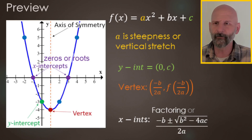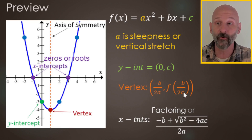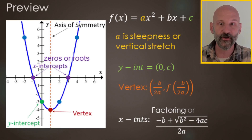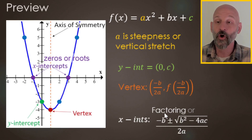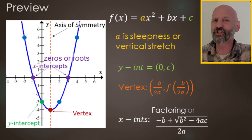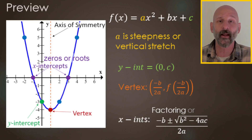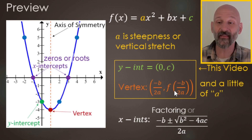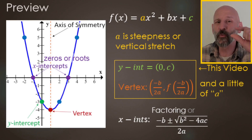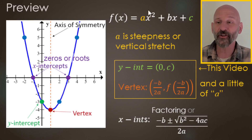Whatever value you get from negative b over 2a, you then evaluate the function for that value to find the y value of your vertex, since it's an ordered pair. For calculating x-intercepts, there are two main ways: you're either going to factor or use the quadratic formula. In this video, we're really going to be focused on the y-intercept and the vertex as our main strategy, and we'll also talk a bit about the leading coefficient 'a'.